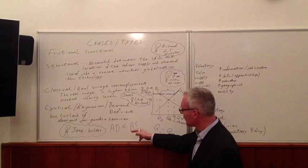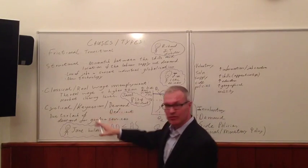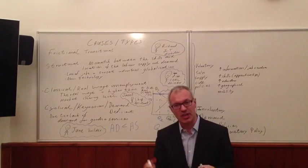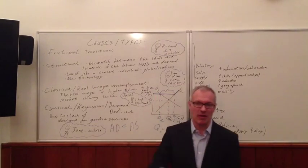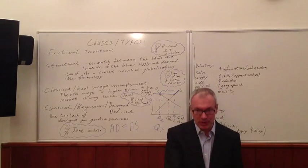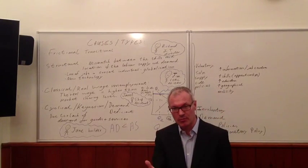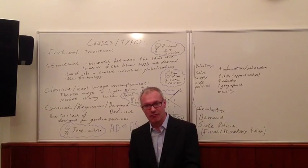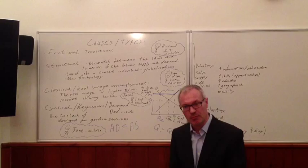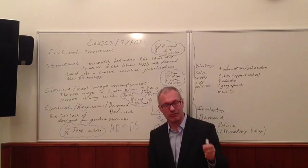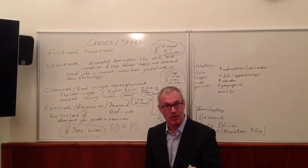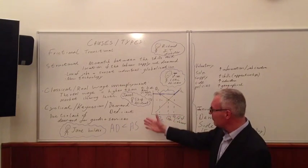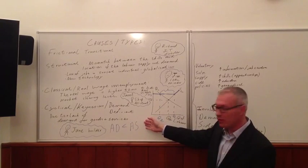Demand-deficient unemployment can even occur when there's not only a recession, but actually a slowdown. Say we have 1% economic growth in real terms, only 1%. Imagine if productivity is growing at 2.5%. Then firms are going to be shedding labour because productivity is growing faster than the actual economy at 1%. So even when there's a slowdown, you can get cyclical unemployment.